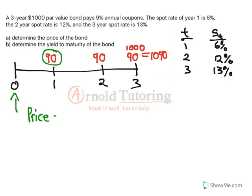Price, again, present value of all the future cash flows. So that first 90 happens at time 1, that's one year out in the future, so I'm going to discount at the 1-year spot rate. So I'm going to discount 1 plus the 6%, so 1.06, and that's just coming back 1 year.